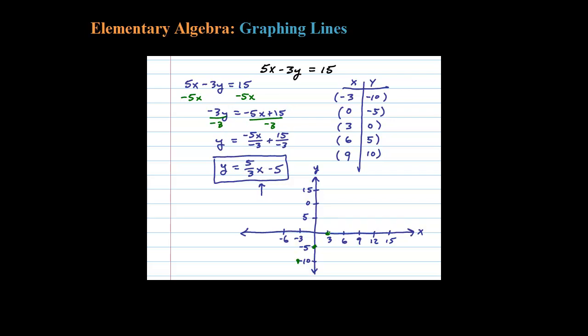3 comma 0, x-intercept there. 6 comma 5 and 9 comma 10. Then use a straight edge if you can, connect the dots, and that's the graph of the line here by plotting points. This is the line 5x minus 3y equals 15.